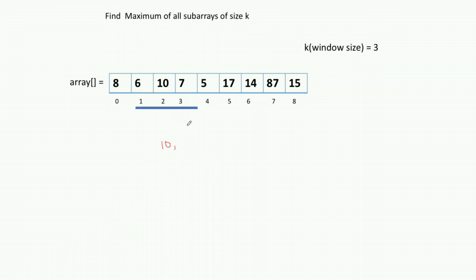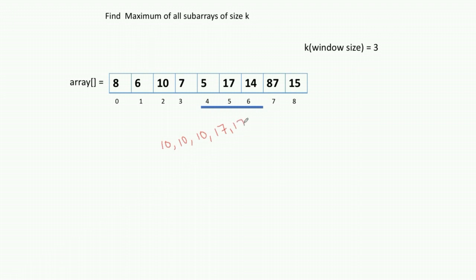Similarly, in the next subarray the maximum value is 10, and in the next also 10. In the subarray with 17, since 17 is more than 7 and 5, we print 17 — similarly 17, 87, and 87. We need to print all these maximum values for each and every subarray, but we need to do it efficiently.